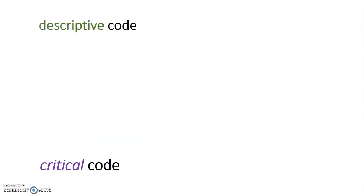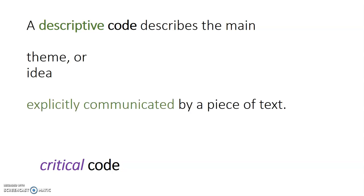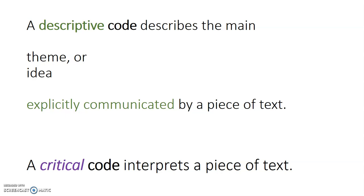You can have two types of code. You can have a descriptive code or you can have a critical code. A descriptive code describes the main theme or idea that is explicitly communicated by a piece of text, whereas a critical code interprets a piece of text. Put simply, if several coders coded up a sentence, they should all get the same descriptive code, but if several coders critically coded up a sentence, you might get several different codes arising.